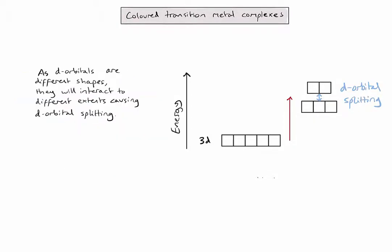To understand why d-orbital splitting causes transition metal complexes to be colored, let's take an example. The copper 2-plus ion would have 9 d-electrons. So in the original 3d sublevel, my electrons would be put in the boxes like this. After d-orbital splitting has occurred, I need to fill the lower energy d-orbitals first and then the higher energy ones, so the electrons would be put in the boxes something like this.